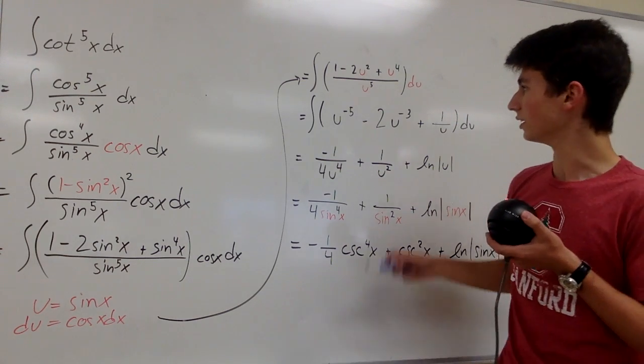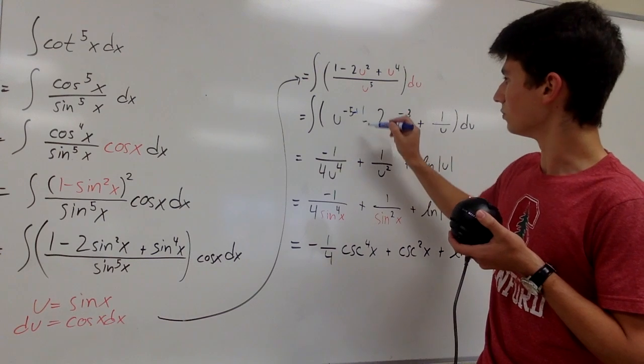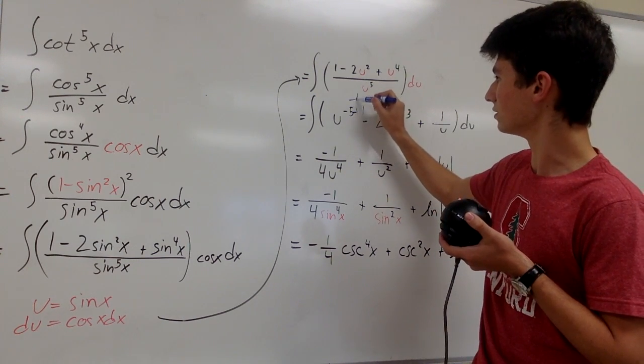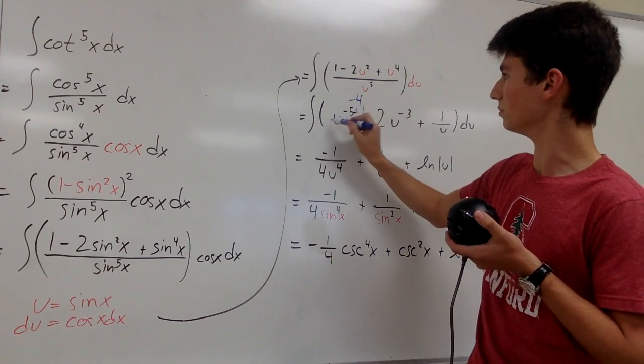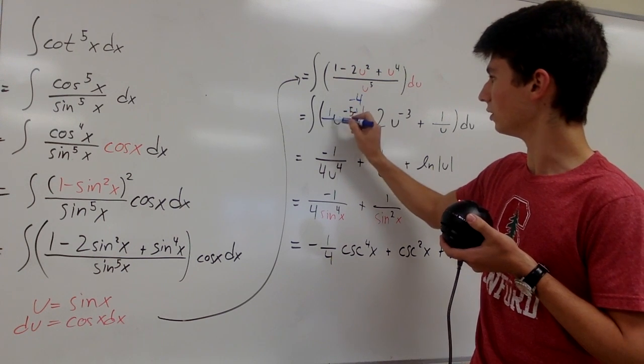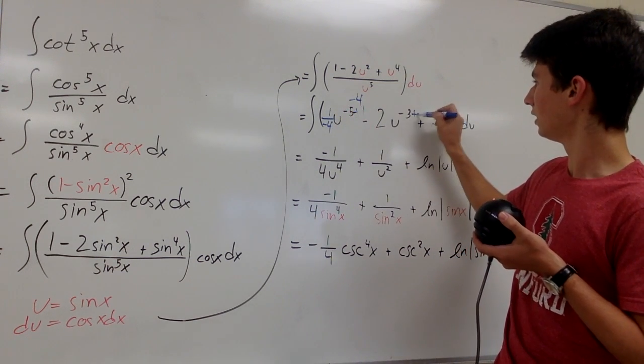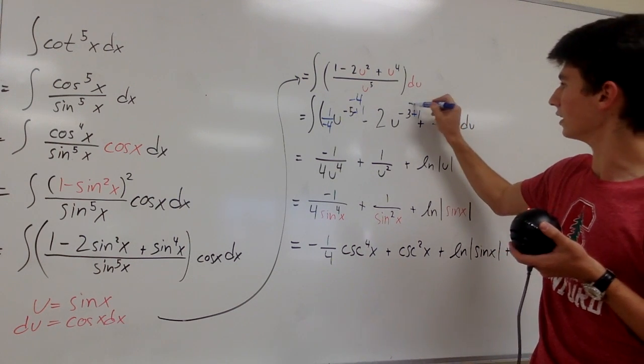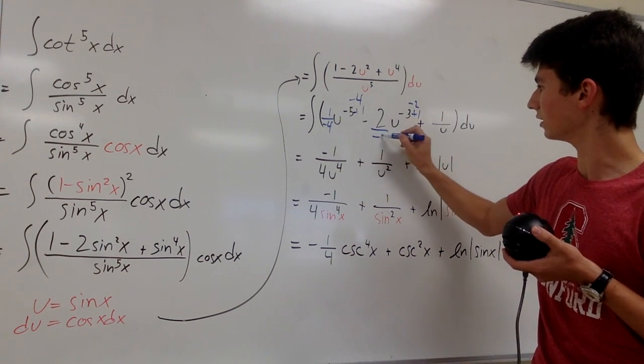And now when we integrate, we're going to add one here plus one, and that turns out to be negative four, and so we multiply by one over negative four. For this, we add one, we get negative two, and we divide by negative two.